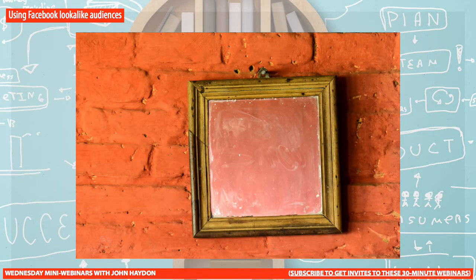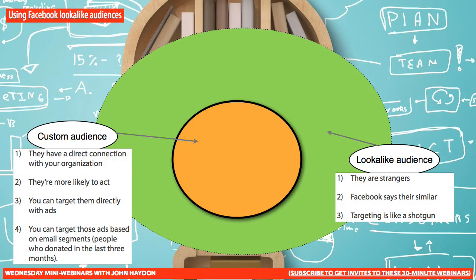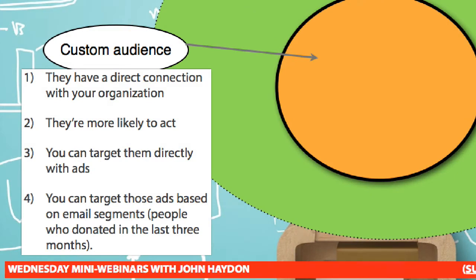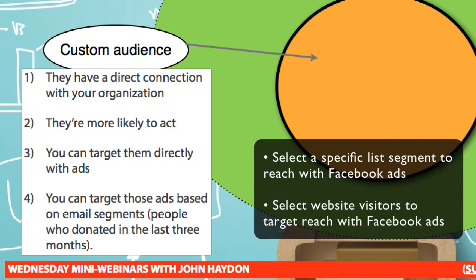It's not perfect because we're really talking about people who know us already versus people who don't know us — totally different. Custom audiences have a direct connection to your organization: they are on your email list, they have visited your website. Because of that, they're most likely to take action. With a custom audience you could target them directly with ads — for example, targeting donors who donated in the past three months to promote a specific ad, maybe to have them take another action or consider a monthly donation.